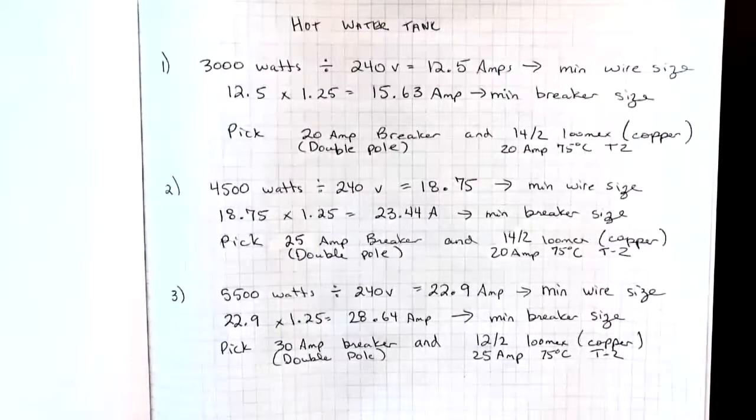Let's look at some examples for a hot water tank calculation. Number one is a 3000 watt hot water tank. These are dual element hot water tanks, but they have a flip-flop switch.